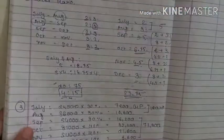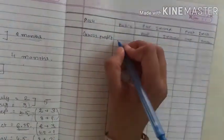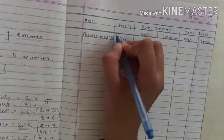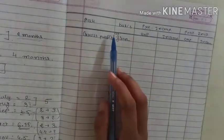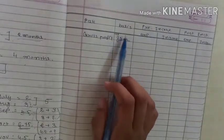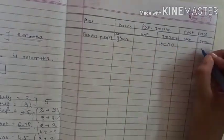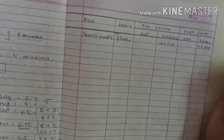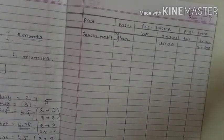Now we put both gross profit figures into the statement. Gross profit is divided as given — since rates differ by month, we use the actual calculated values rather than the sales ratio. Pre-incorporation gross profit = 18,000; post-incorporation gross profit = 73,800. Now let's distribute the other expenses and income items.